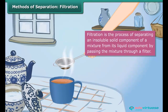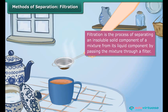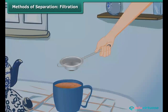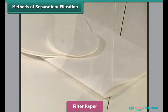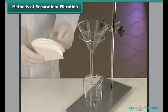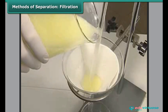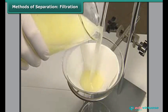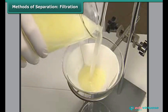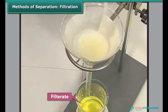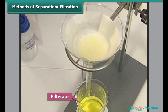Filtration, however, cannot remove the solid substances dissolved in a liquid. Sometimes fine particles of the solid component pass through the strainer used as the medium for filtration. In such a situation, filter paper is used. A filter paper is a special paper which has millions of tiny holes in it. While the liquid can pass through these holes, the solid particles remain on the filter paper. The liquid which passes through the filter paper is called the filtrate, and the solid particles left behind are called the residue.